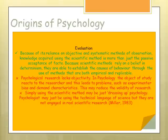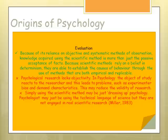Because scientific methods are relied on, we are able to establish a cause of behaviour through the methods and we are able to predict behaviour. However, some psychological research does lack objectivity, which can lead to problems with experimental bias and demand characteristics that may reduce the validity of research. Also, some have argued that using the scientific method is just dressing up psychology — psychologists may be using the technical language of science but not engaged in real scientific research.